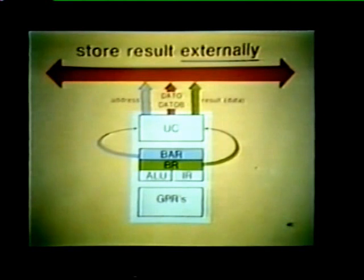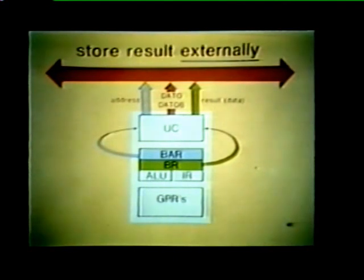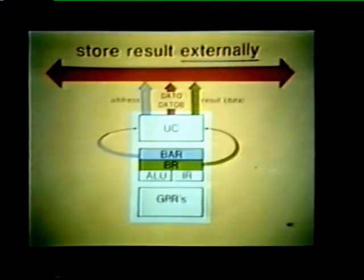When the result is stored externally, the unibus control places the address of the storage device on the unibus, specifies the type of transfer — either a data O or a data OB — and takes the result stored in the BR and places it on the bus data lines.